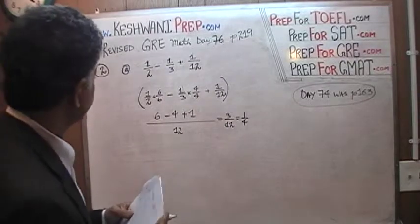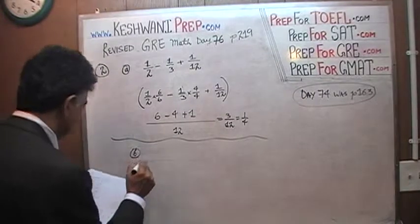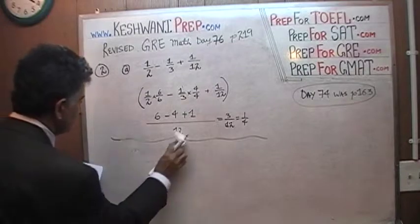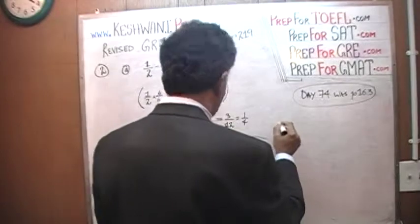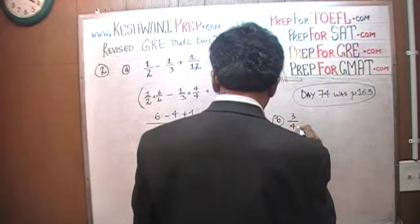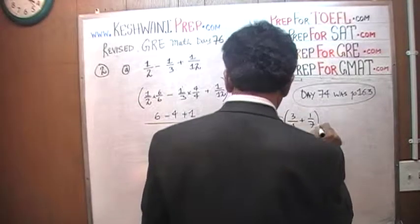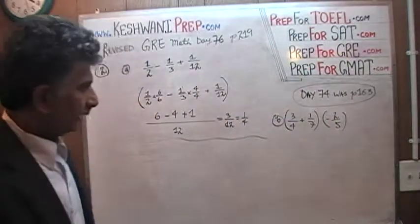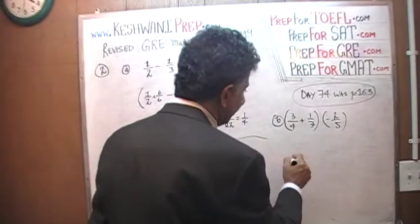Let's take a look at B. Three quarters plus one seventh, times negative two fifths. Again, we need the common denominator. The common denominator of 4 and 7 is 28.